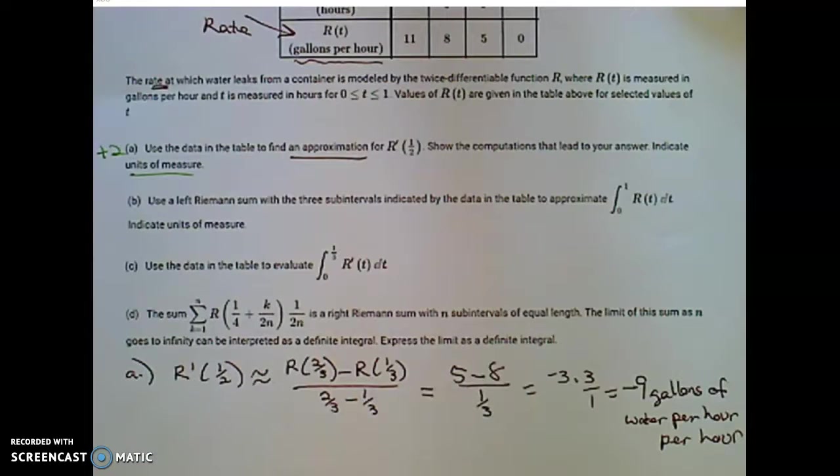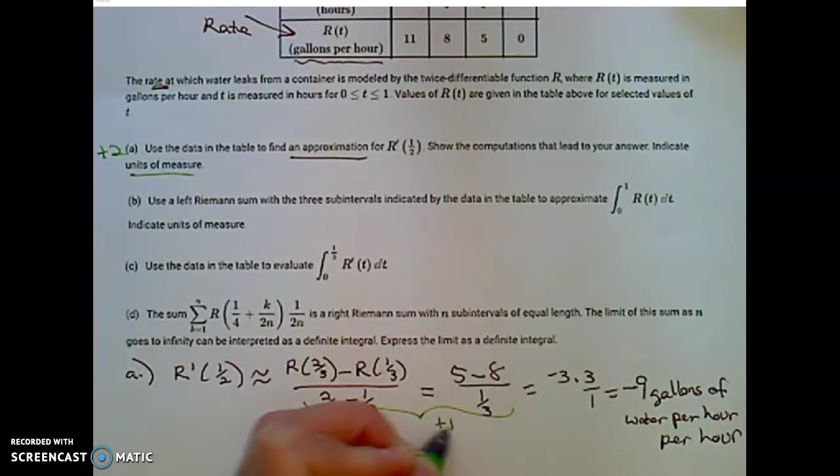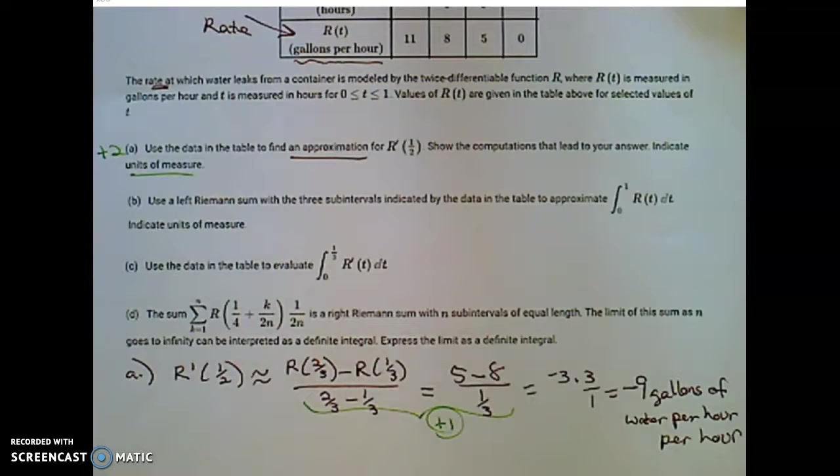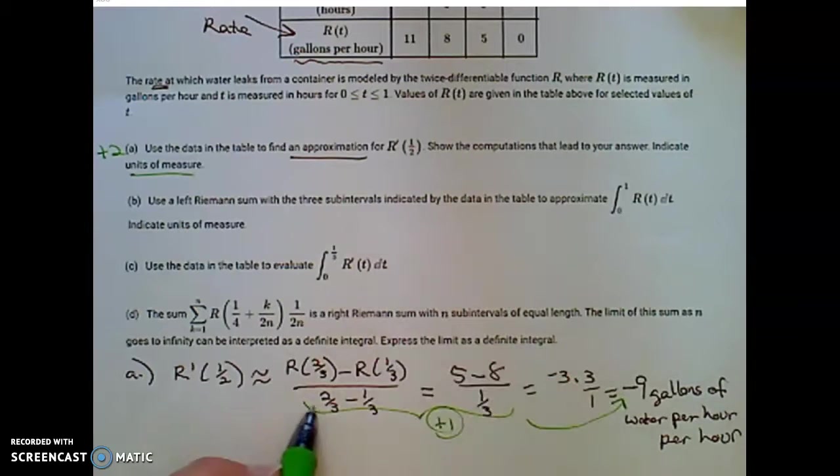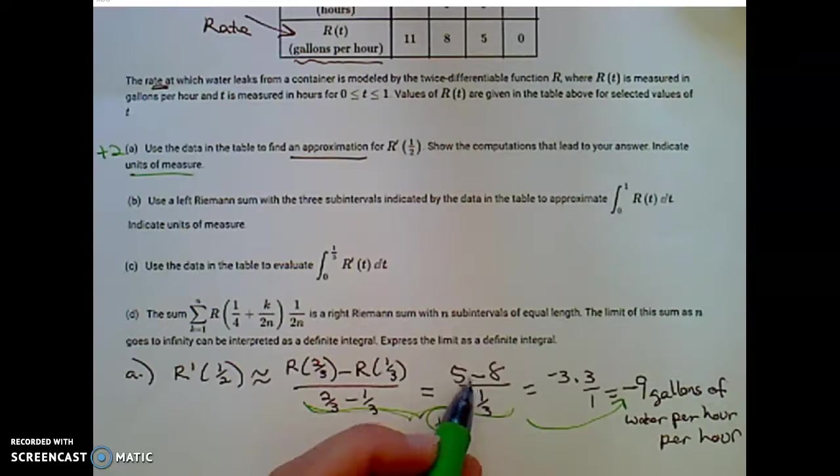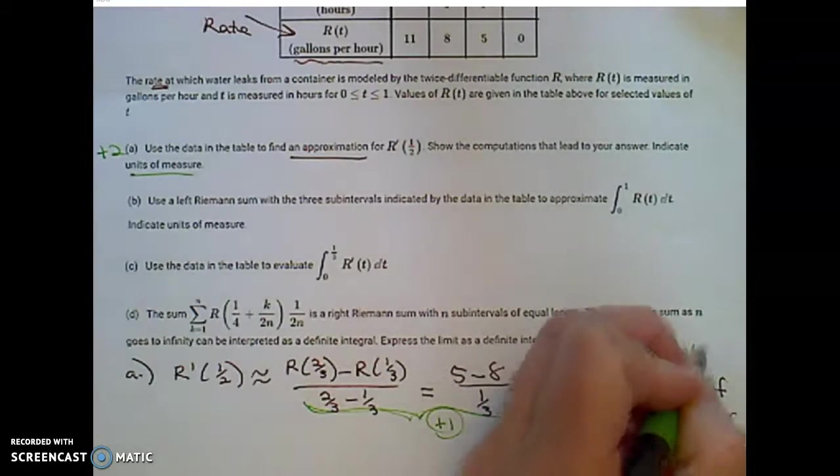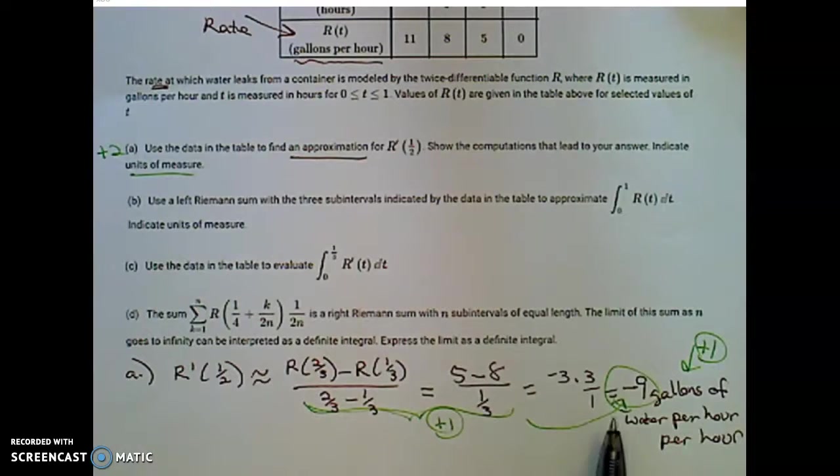This was worth 2 points. You got a point for substituting in function values into that rate of change. You got a point for the correct answer, but it needs to be supported with function values. And you get one point for correct units. One point for correct answer with supporting work, and one point for the correct units.